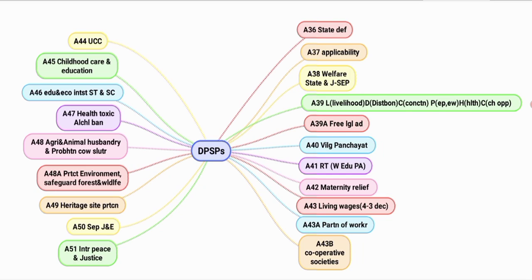Article 39A covers free legal aid. Article 40 is about village panchayat. Article 41: 4 minus 1 equals 3, giving us three rights — right to work, right to education, and right to public assistance.